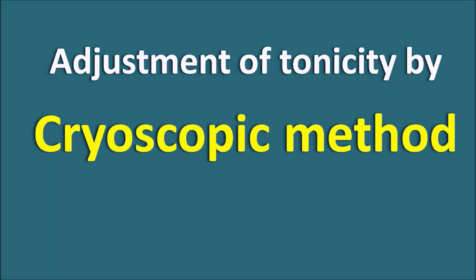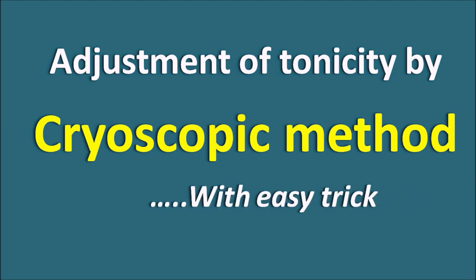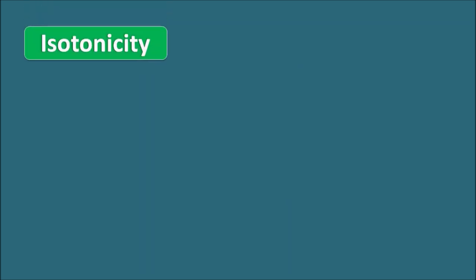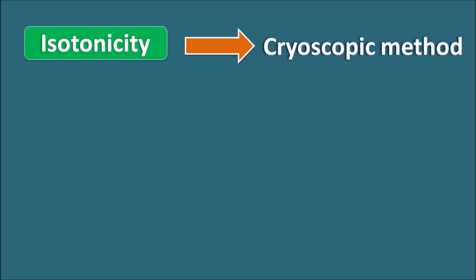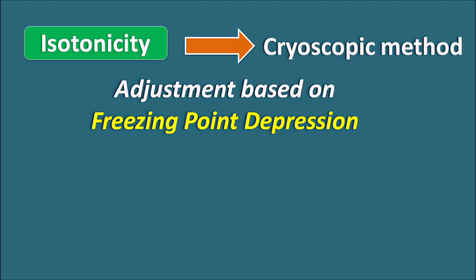Today we will discuss the adjustment of tonicity by the cryoscopic method. Isotonicity can be adjusted by various methods. In our previous video we discussed the sodium chloride equivalent method. The cryoscopic method involves adjustment of tonicity by freezing point depression. Sodium chloride can produce freezing point depression, which is a colligative property that can be used to adjust the isotonicity of the solution.